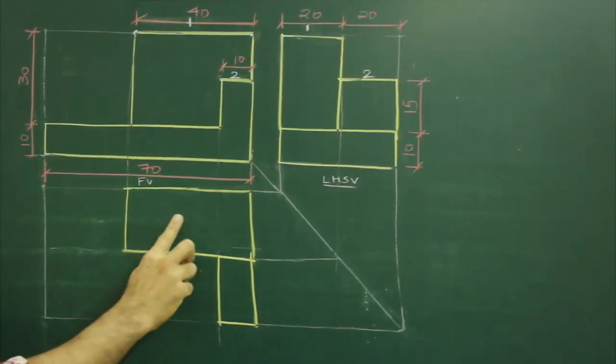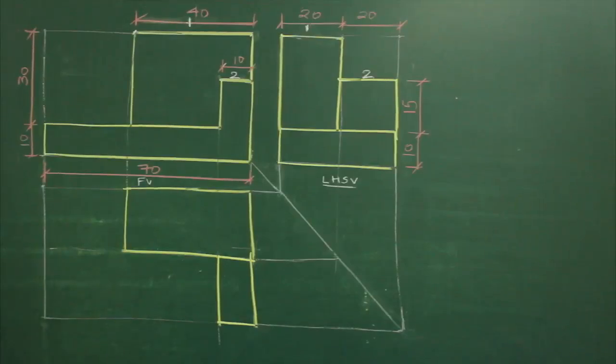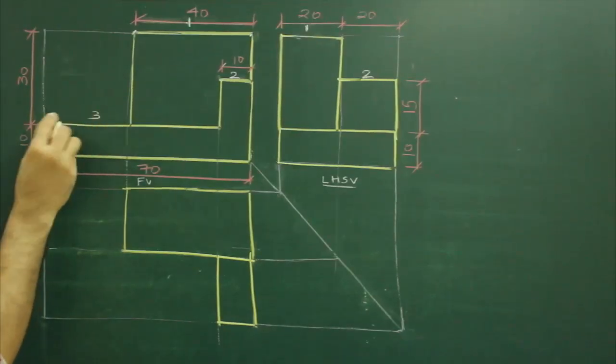See, so we have drawn part one, part two. Now we will see part three, that is this surface.